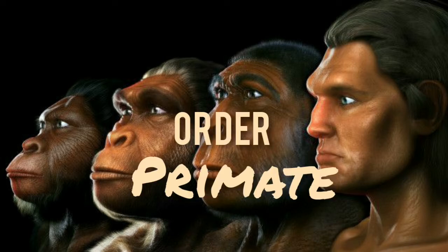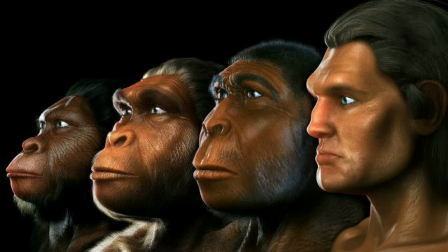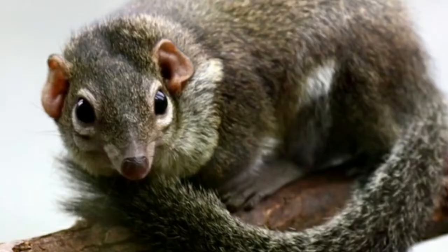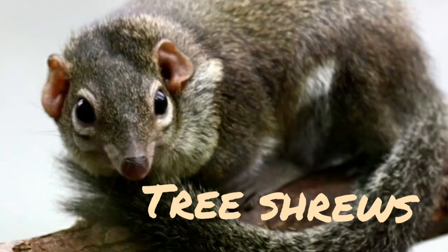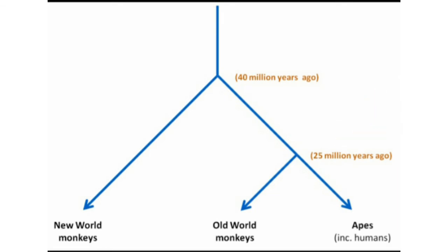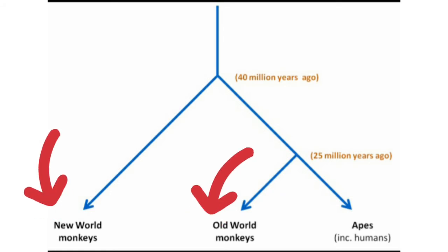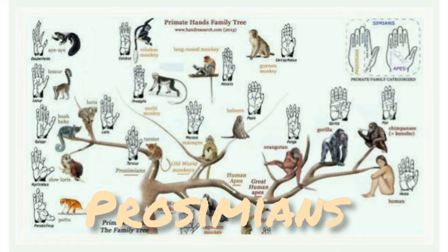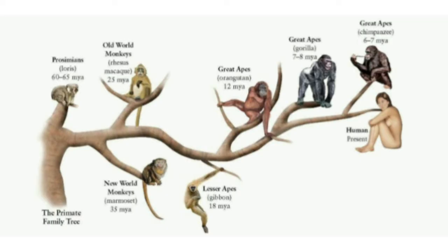Scientists believe that the early primate probably evolved some 60 to 75 million years ago from the tree shrews. The primitive primate shows two lines of evolution. Along one line, the primates showed evolution toward man, whereas on the other line, the prosimians gave origin to monkeys. The prosimians are the old world monkeys, and the monkeys of the present day are the new world monkeys.